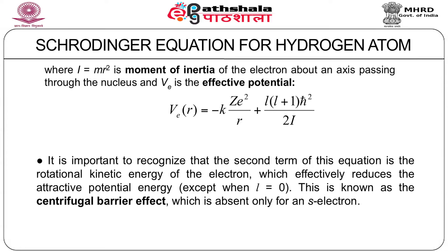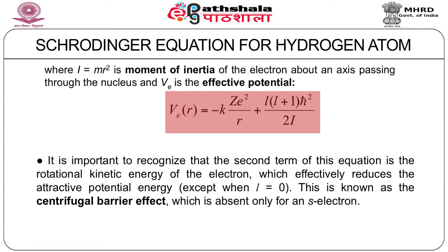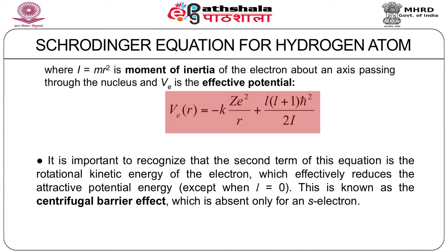It is important to recognize that the second term of the effective potential equation is the rotational kinetic energy of the electron, which effectively reduces the attractive potential energy, except when L = 0. This is known as the centrifugal barrier effect, which is absent only for an S electron where L = 0.